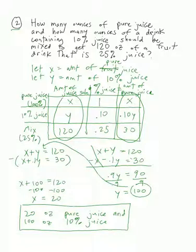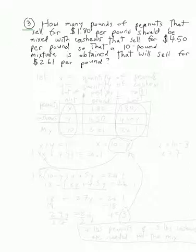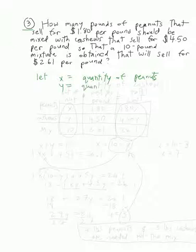Let's do question number three — our last one. How many pounds of peanuts that sell for $1.80 per pound should be mixed with cashews that sell for $4.50 per pound, so that a 10-pound mixture is obtained that will sell for $2.61 per pound? We're going to let x equal the quantity of peanuts and y equal the quantity of cashews.